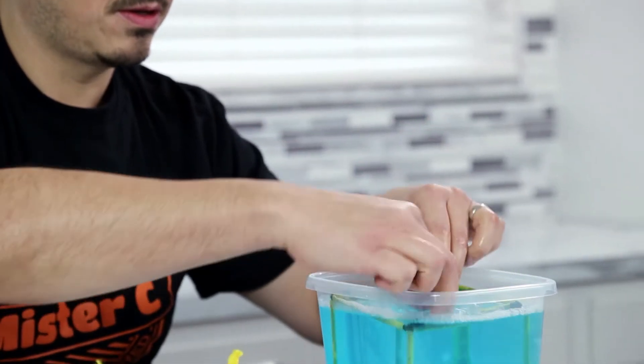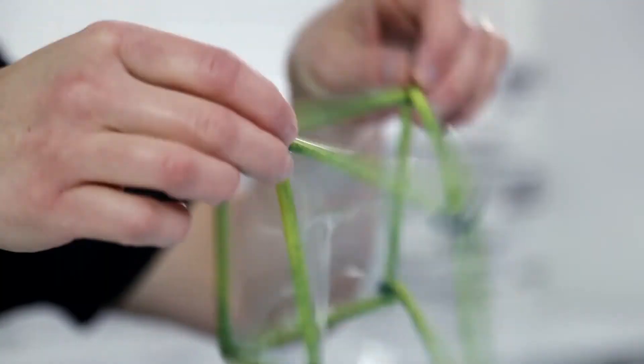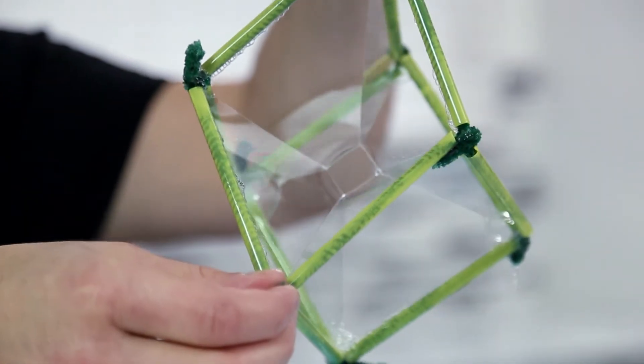Now we're going to take this cube and dip it into the bubble solution. Lift it out gently and it forms a little square on the inside.